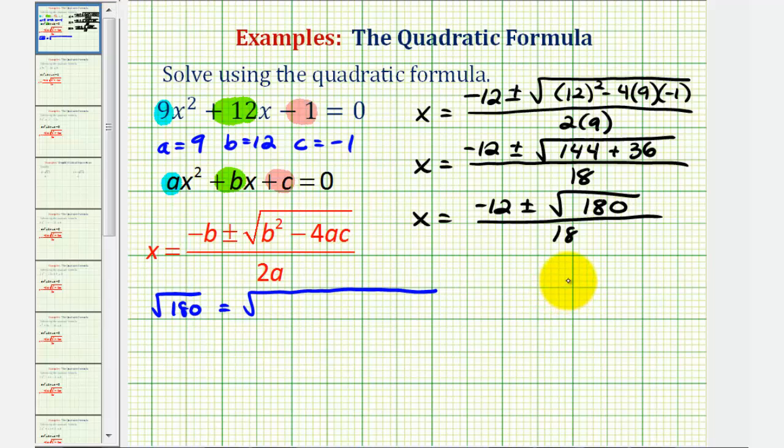So one hundred eighty is equal to eighteen times ten. Eighteen is equal to nine times two. Two is prime. Nine is equal to three times three. These are both prime. And ten is equal to two times five, both prime. So the prime factorization of one hundred eighty has two factors of two, two factors of three, and a factor of five.